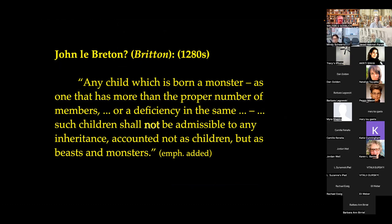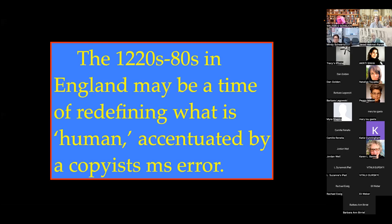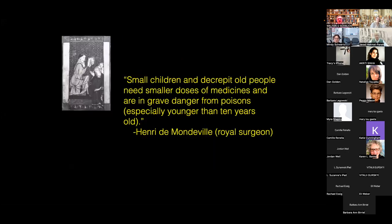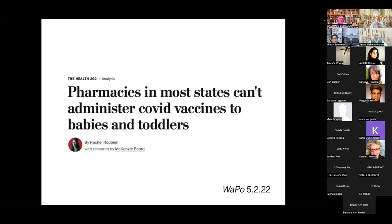However, because documents were copied by hand, one manuscript copyist dropped the word 'not' — and it was critical. All of a sudden the grammar read: 'I do call a child a monster though it's disabled.' That copy was picked up by subsequent scholars, so by the end of the 13th century in England, John le Breton argued that a child is born a monster if it is disabled. This illustrates a transformation of the social interface between children with disabilities and society, modified by transcription errors. Medieval medical scholars also argued that children were at risk when treated medically — smaller doses were needed for small children and the elderly.